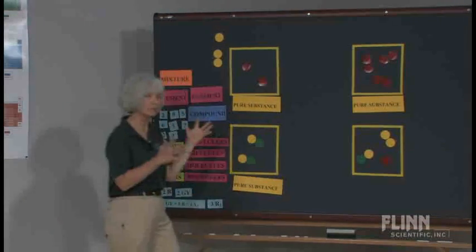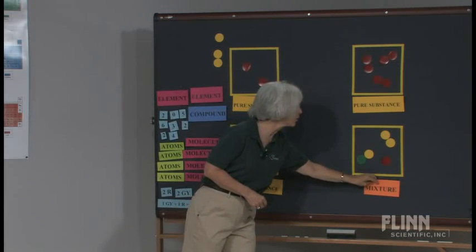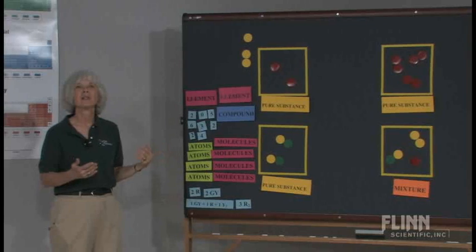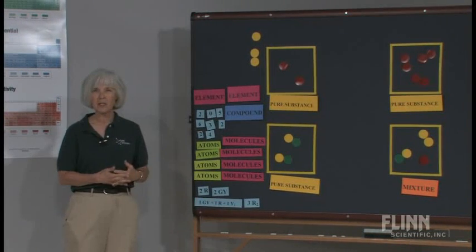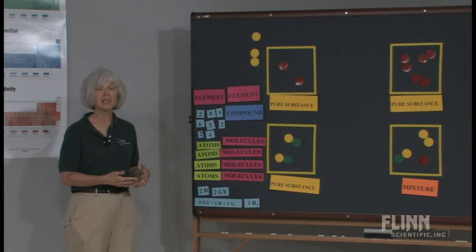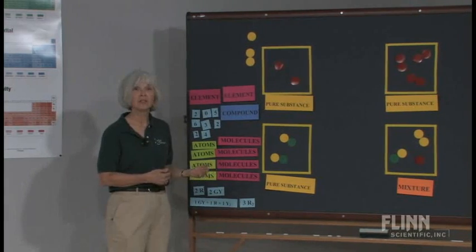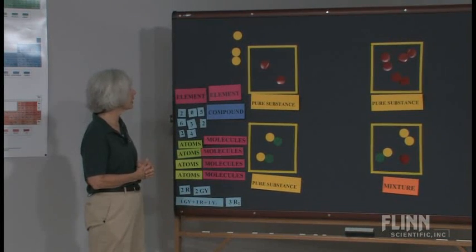The last one over here, obviously a lot of different kinds of things. We can easily label that as a mixture. Now, what's the next thing down when you're classifying matter? Once you decide something is a pure substance, then it's knowing whether it is an element or a compound.